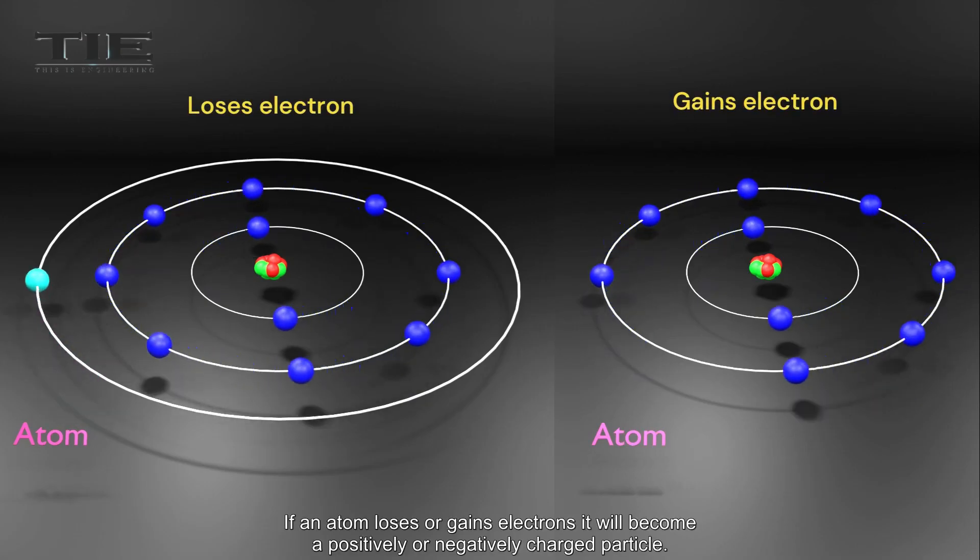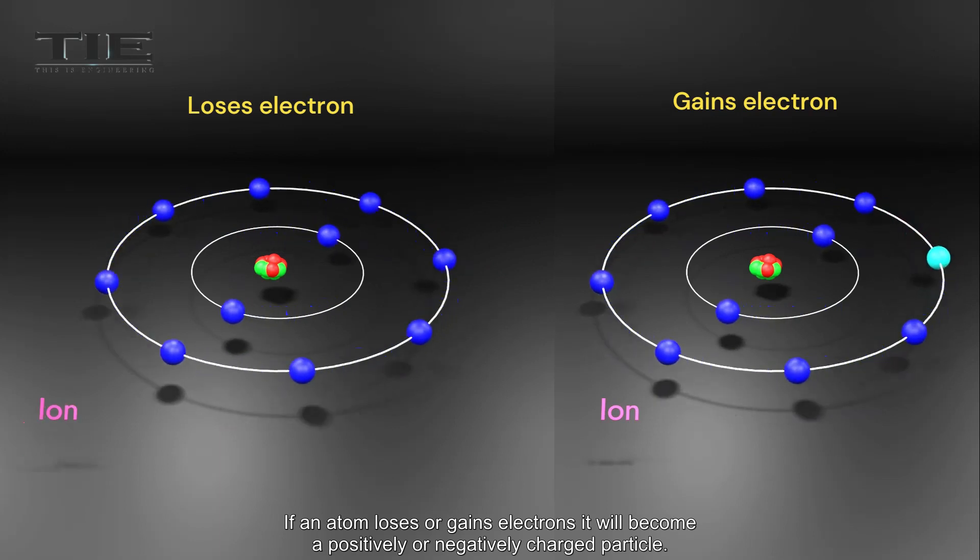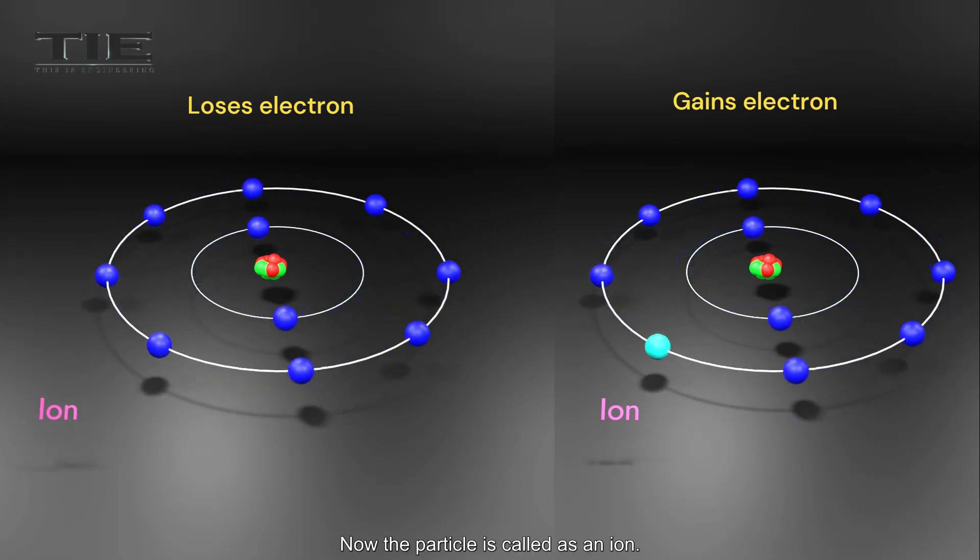If an atom loses or gains electrons, it will become a positively or negatively charged particle. Now the particle is called an ion.